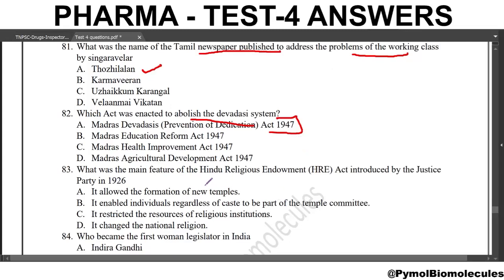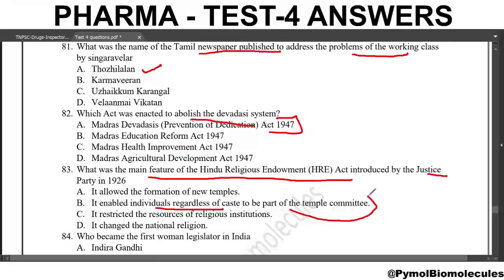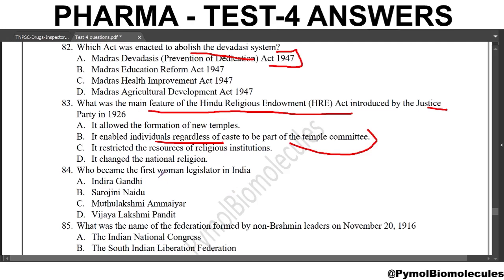Next question: what was the main feature of the Hindu Religious Endowment (HRE) Act introduced by the Justice Party in 1926? The answer is that it enabled individuals, regardless of caste, to be part of the temple committee. Next question: who became the first woman legislator in India? The answer is Muthulakshmi Ammayar.